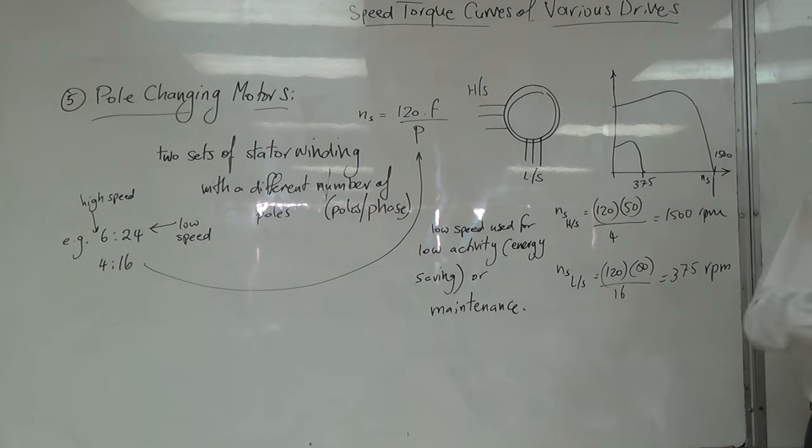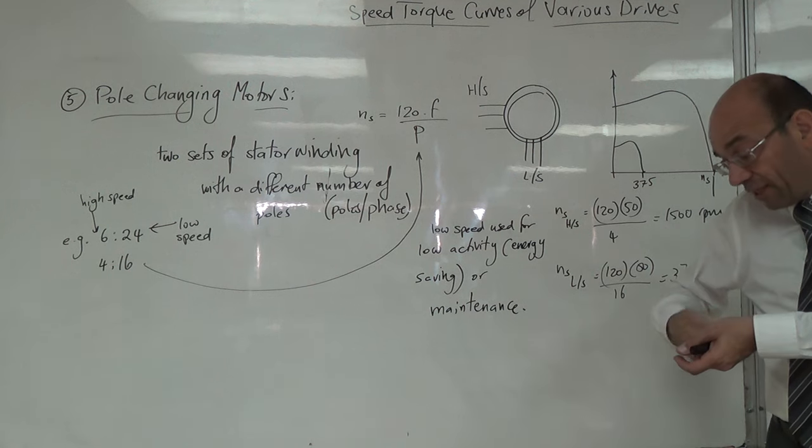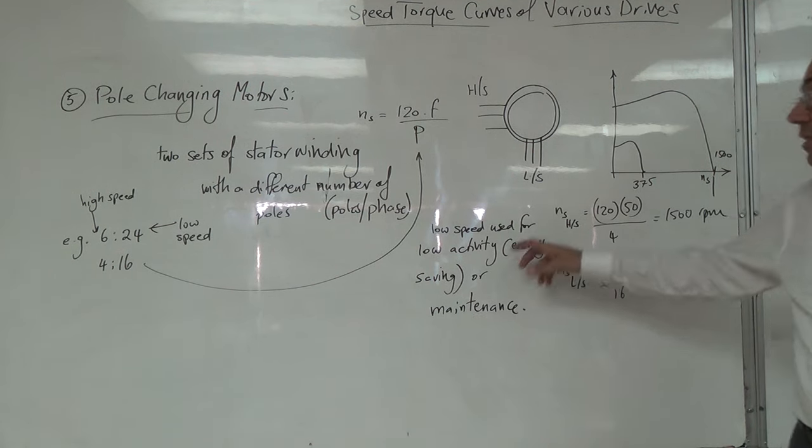أو في حالات الـ maintenance، إذا عمنا نعمل صيانة على النظام، نخفف من السرعة. بستخدم الـ low speed winding اللي بتعطيني سرعة أقل.